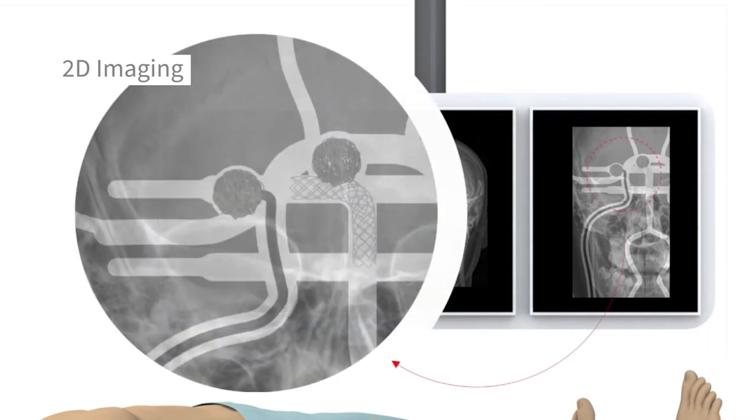For example, one cannot spatially assess the relationship between the coils being deposited in an aneurysm and the stent used to hold them there.